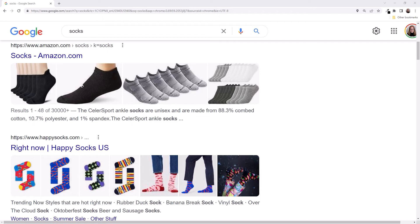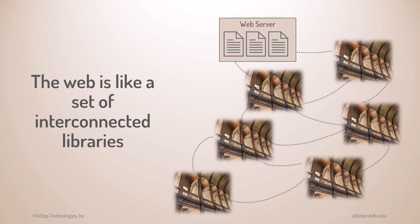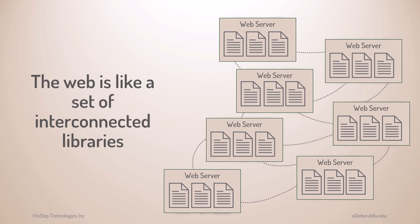Think of the web like an interconnected set of libraries, each containing many documents. Those are some fancy libraries. Each of those libraries represents a web server at a data center somewhere. A web server is a computer that stores documents, which can be web pages and other resources such as images and movies, and serves them out to the browser. Together, these interconnected web servers store everything we see on the web.